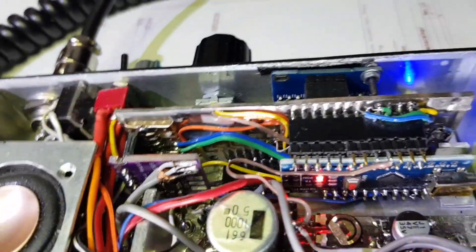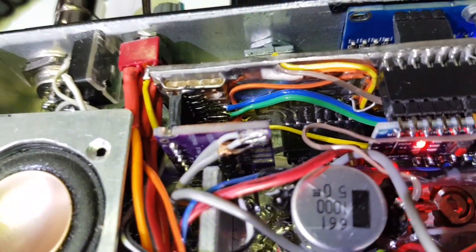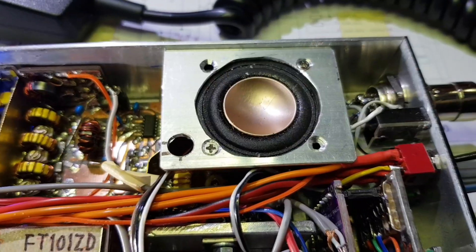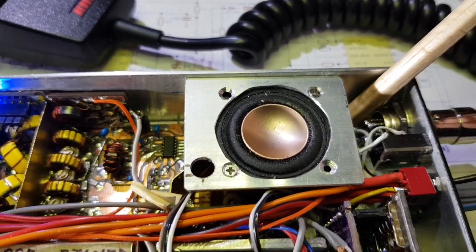Behind the front panel, Arduino Nano and the SI5351 board. Underneath the speaker, can't see it. Mic amplifier, balanced modulator.